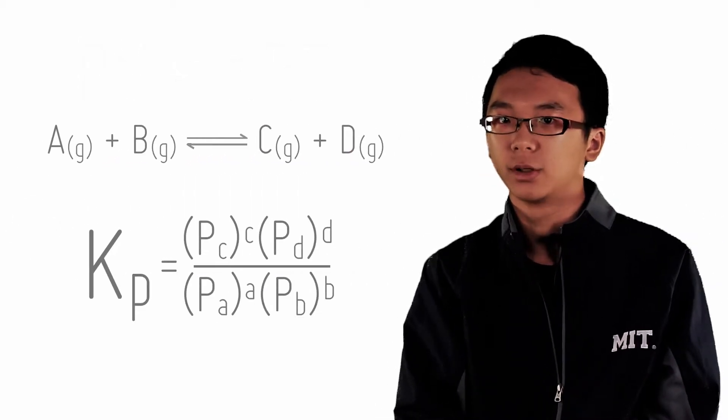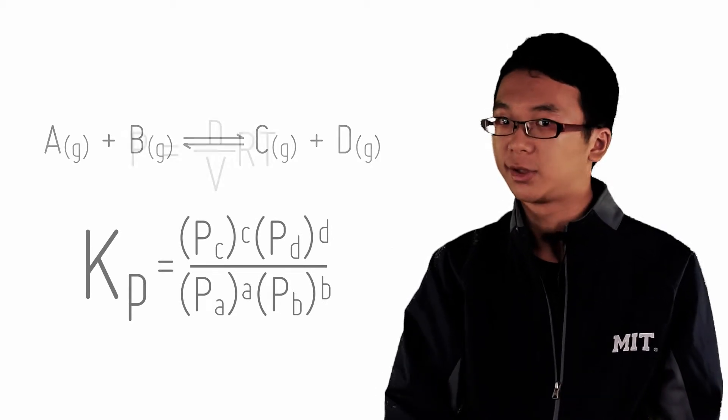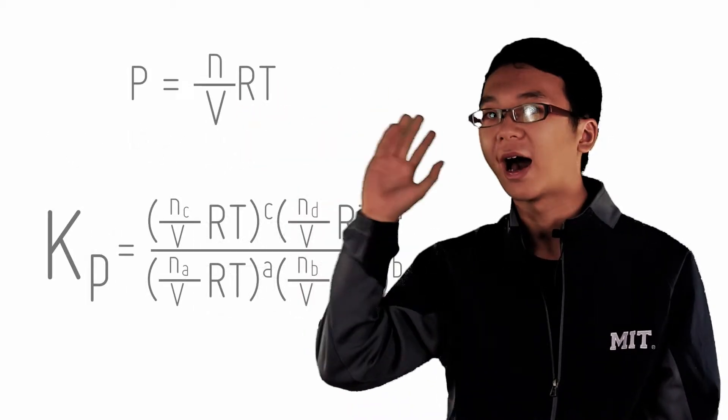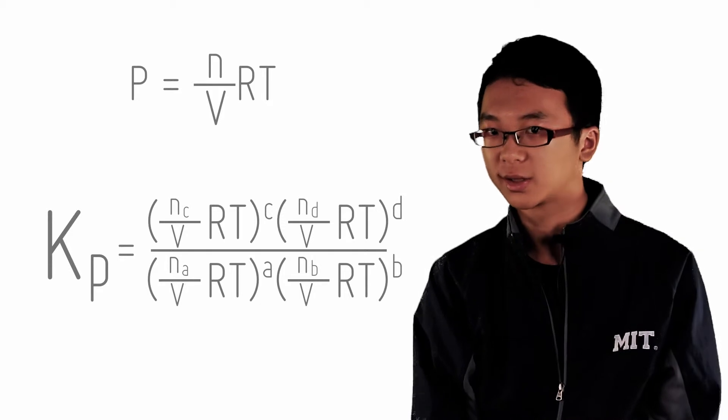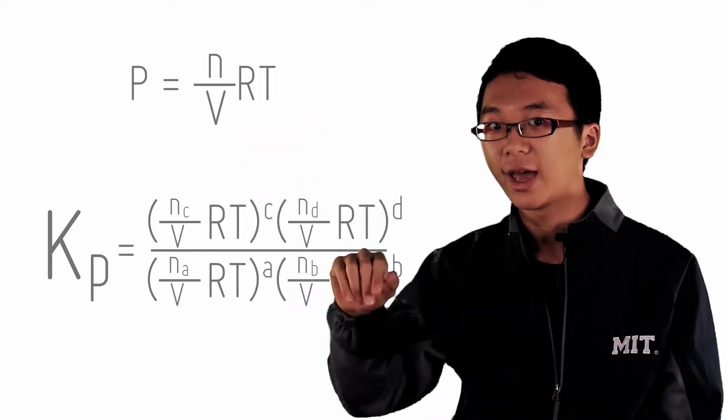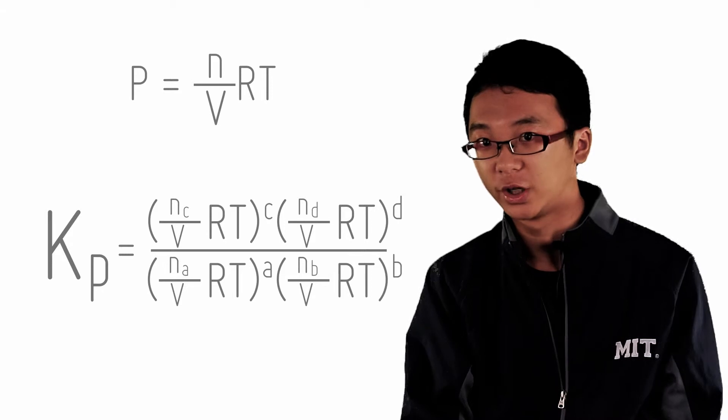Let's go through this step by step. Looking at the expression, we substitute all the partial pressures with the ideal gas law. We can take out the constant factor of RT, leaving n/V inside because n/V is concentration.